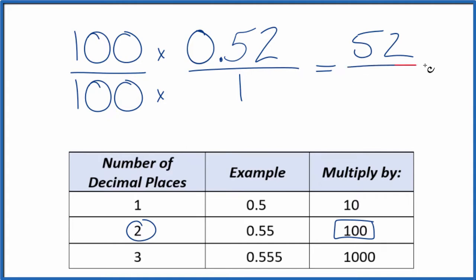100 times 1, that is 100. So now we have our fraction, 52 over 100. That's the same thing as 0.52.